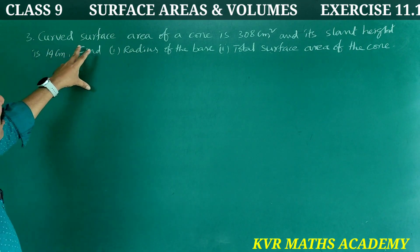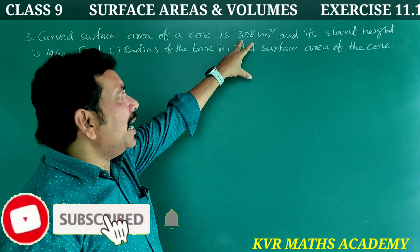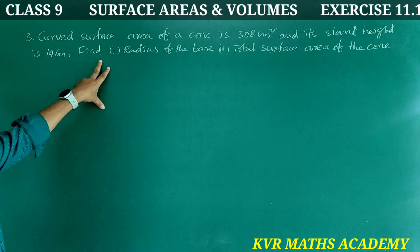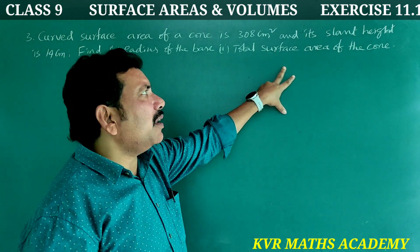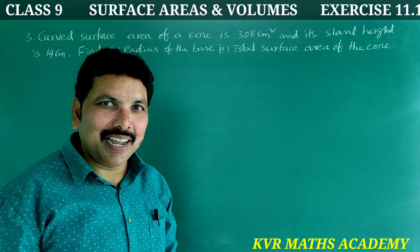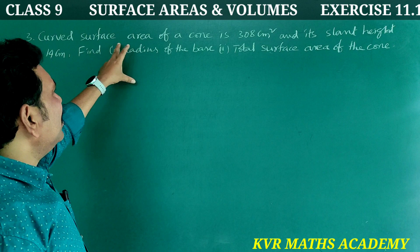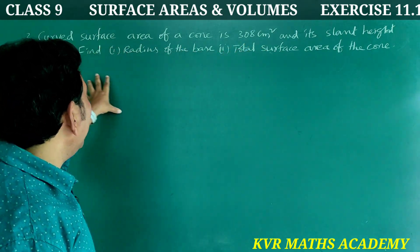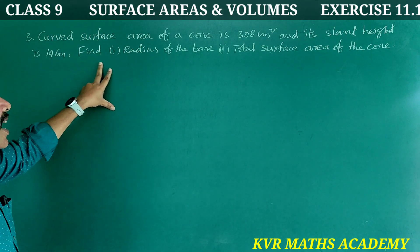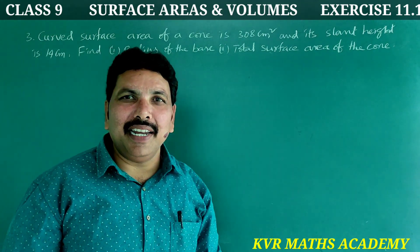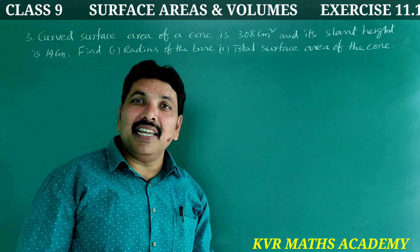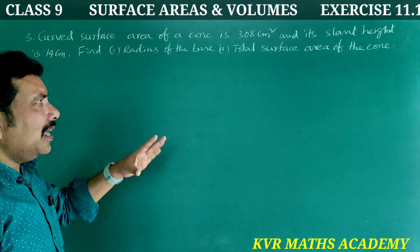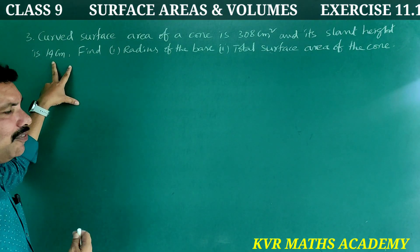Third question: The curved surface area of a cone is 308 cm² and its slant height is 14 cm. Find the radius of the base and the total surface area of the cone.